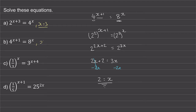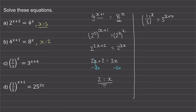Moving on to question c. We have 1 over 3, or one third, raised to the power of x, is equal to 3 to the power of x plus 4. We can write this one third using index notation. Because it is 1 divided by 3, this is the same as 3 to the power of negative 1, where this negative means 1 over. And the 1 is what 3 is raised to the power of.